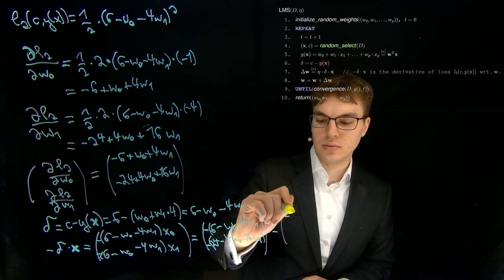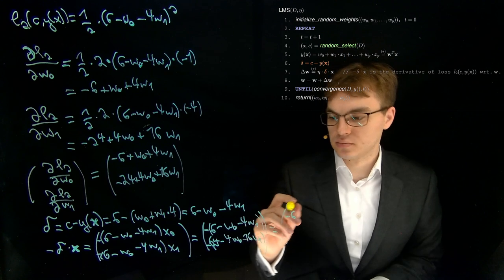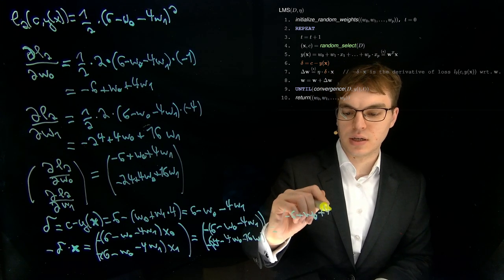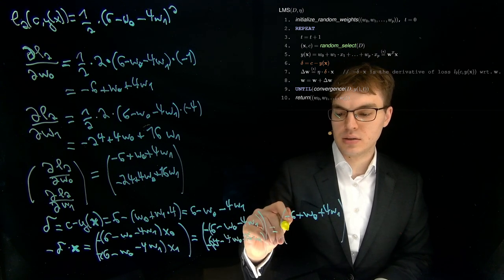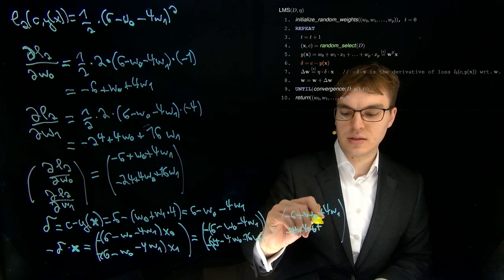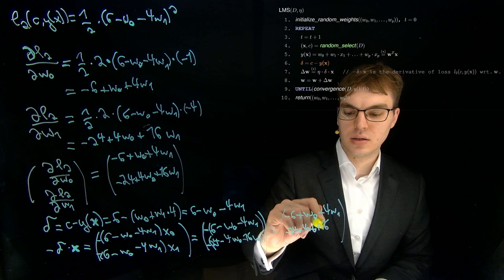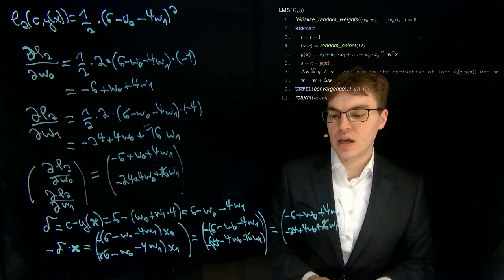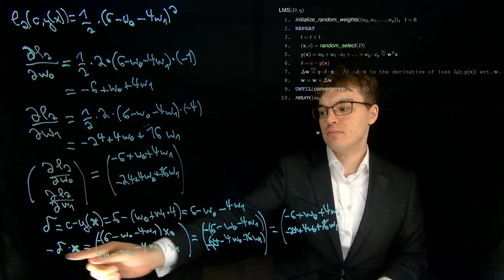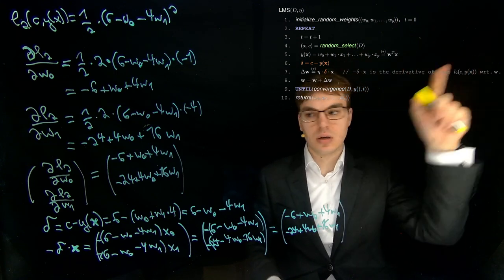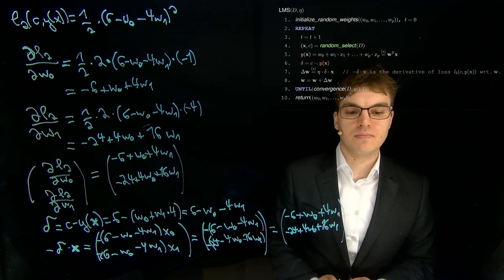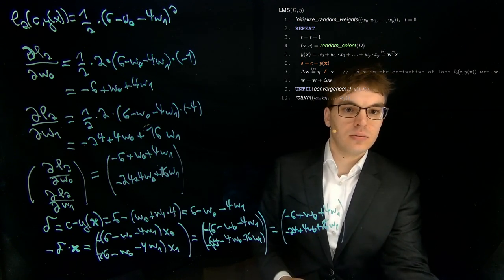So this is equals to minus six plus W zero plus four W one. And minus 24 plus four W zero plus 16 W one. And now our task was to verify that indeed this over here is the same as this. This is what we claim in our algorithm here. And if we compare those, we can see that they are the same.